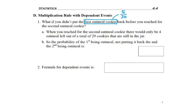But if we don't put that first oatmeal cookie back, then when you reach for that second oatmeal cookie, there's only going to be four cookies left because one of the oatmeal is missing. And there's only going to be 29 total cookies still in the jar because that first cookie didn't make it back in the jar. So this is how we would find the probability.